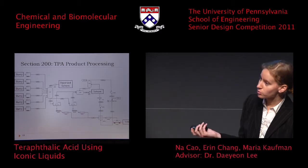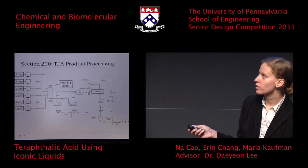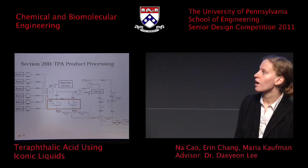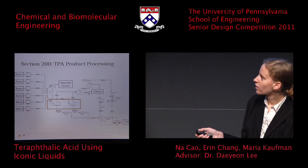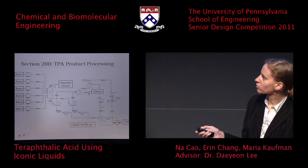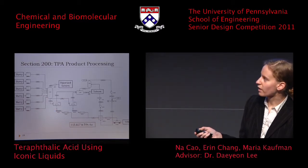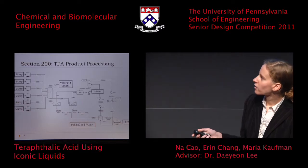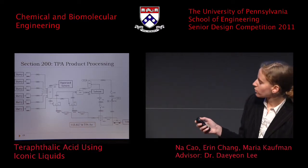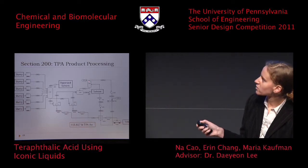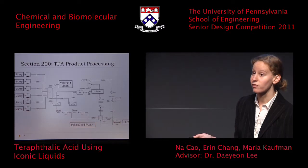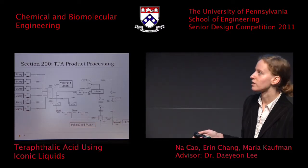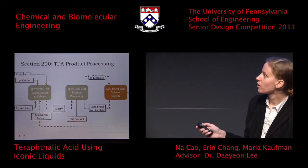To accomplish solid separation, we used a centrifuge, which sends our TPA product to a dryer at about 105,000 pounds per hour. All other equipment is used to recover our acetic acid and ionic liquid for recovery in Section 300.